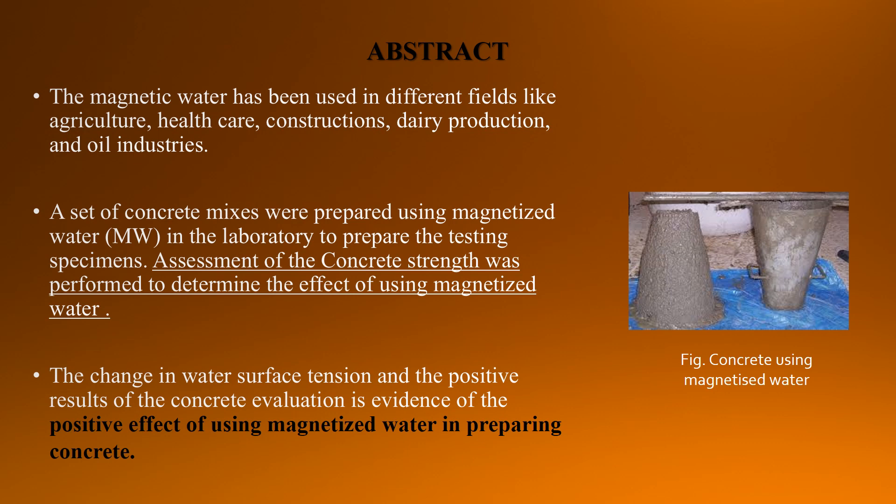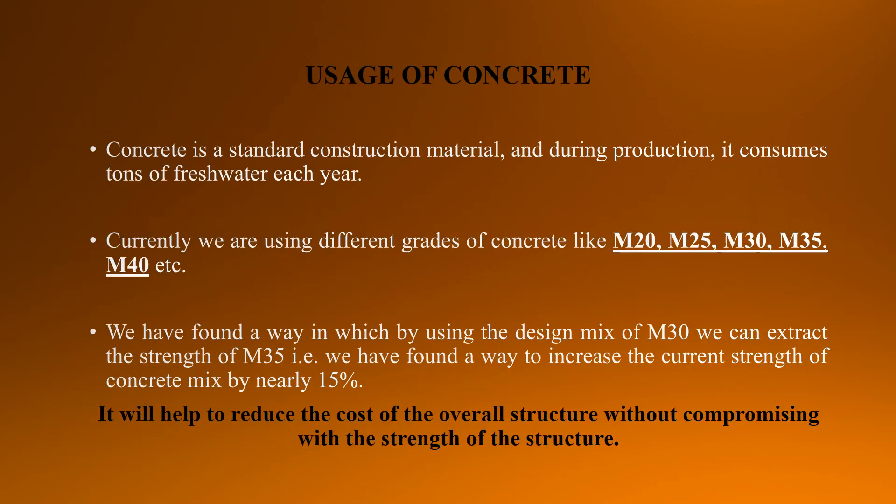Here we can see in the figure the uses of magnetized water in concrete. Concrete is a standard construction material and during production it consumes tons of fresh water each year. We are currently using different grades of concrete like M20, M25, M30, M35, and M40. We found a way by using the design mix of M30 to extract the strength of M35 — that is, we can increase the current strength of a concrete mix by nearly 15%, which will help reduce the cost of the overall structure without compromising its strength.